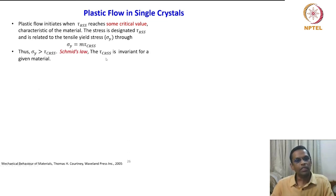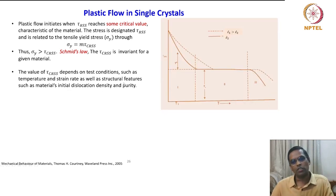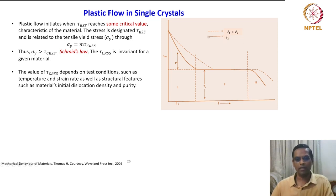The value of tau_CRSS depends on test conditions such as temperature and strain rate, as well as structural features such as the material's initial dislocation density and purity. Here is an important plot — the critical resolved shear stress plotted against temperature, a tau_CRSS versus T plot.